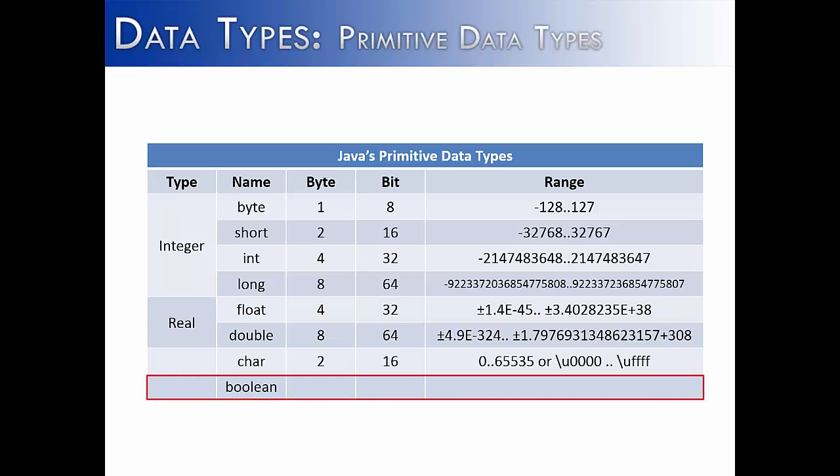Now Boolean is interesting on the chart of Java's primitive data types in that we don't really care how much space it's going to take up on a computer. That's not going to affect anything about its functionality. Depending on architecture is how much space it's going to take up on a particular system. But really, you only need one bit to store a Boolean. That bit would either be 0 or 1 for true or false.